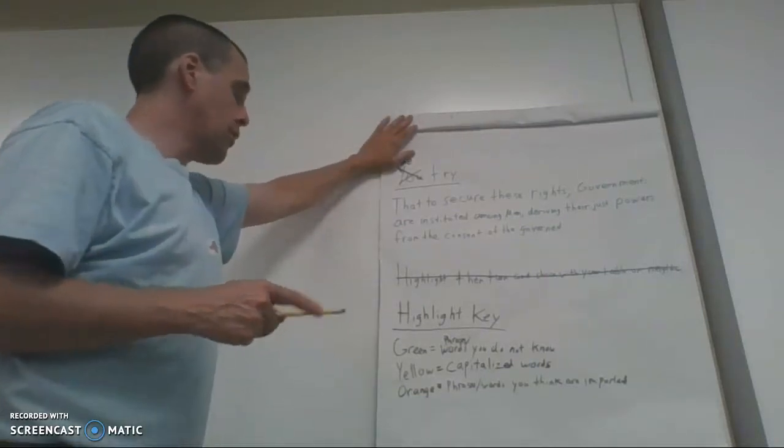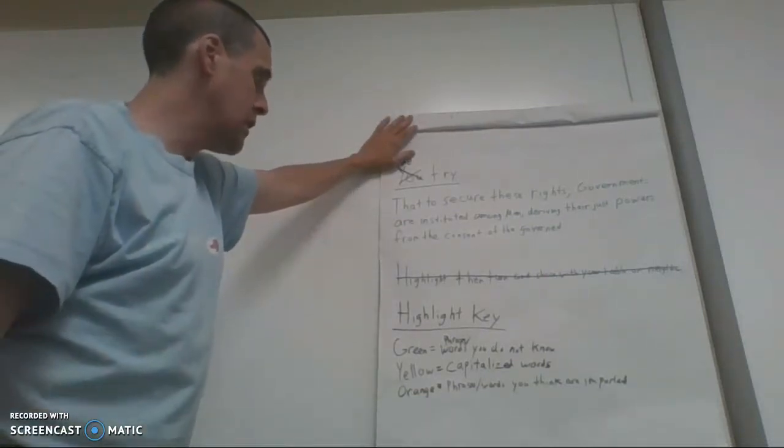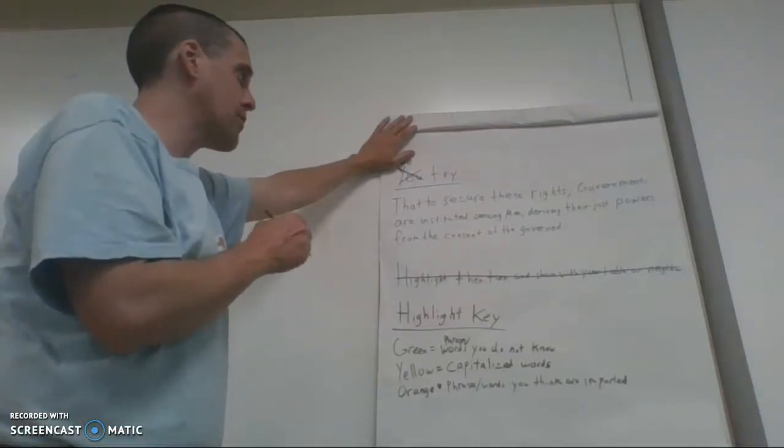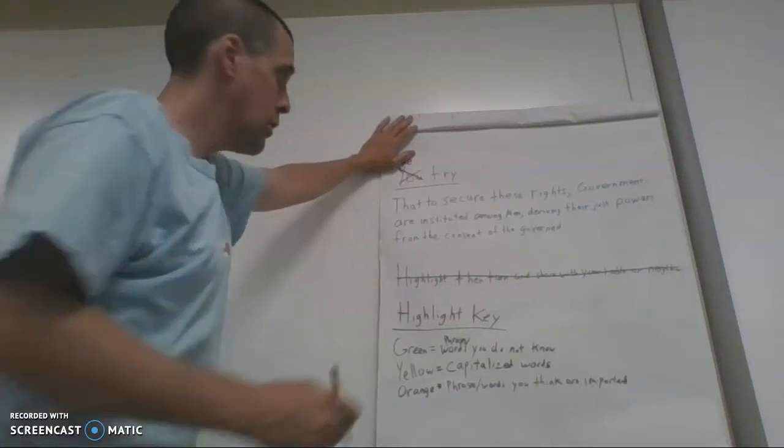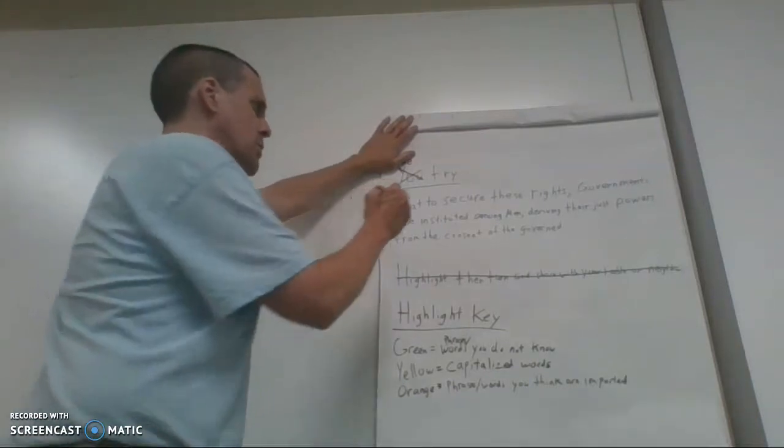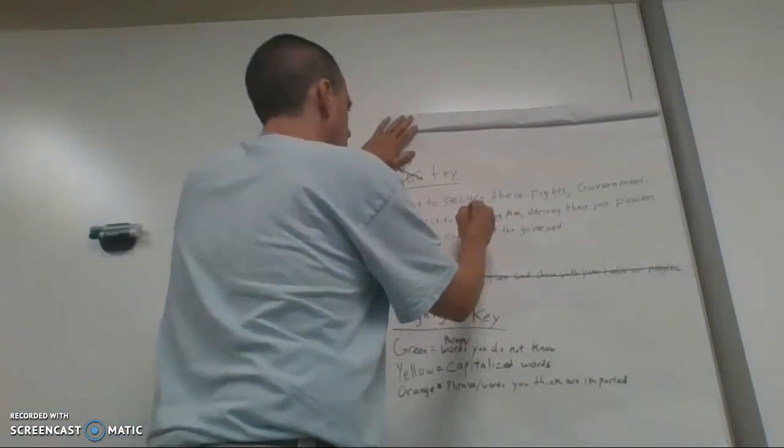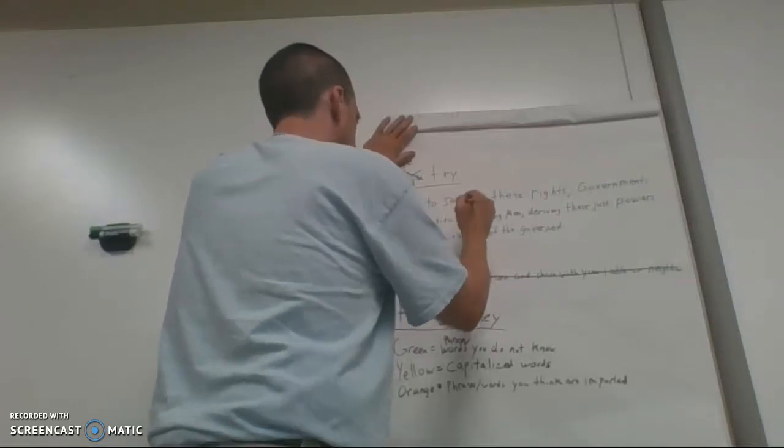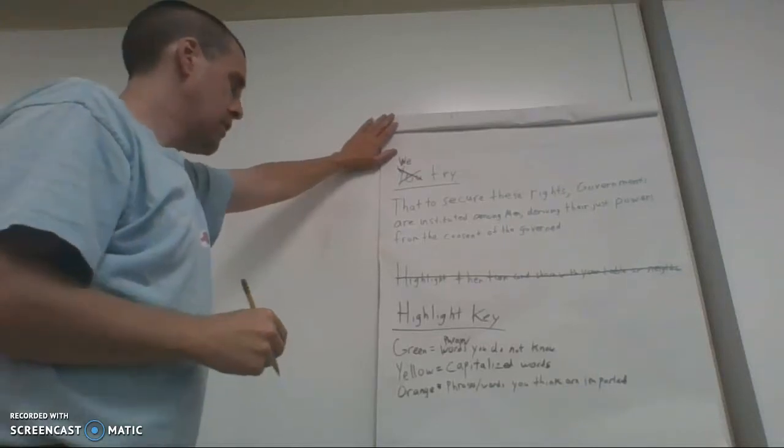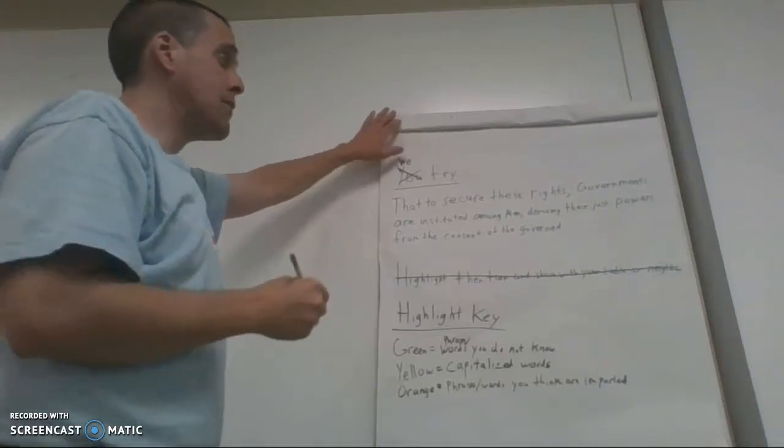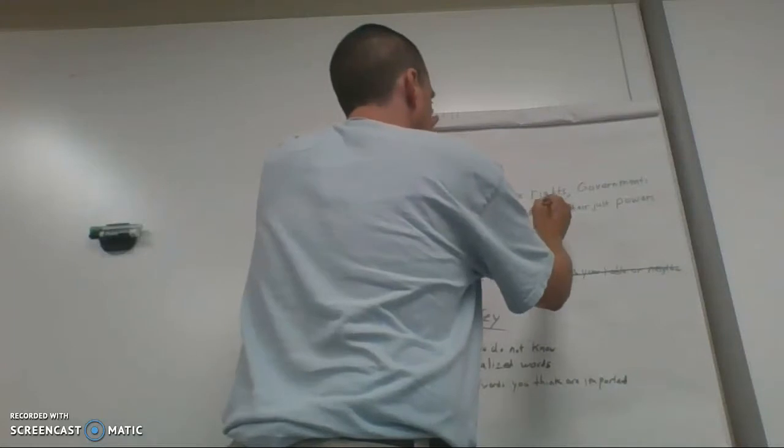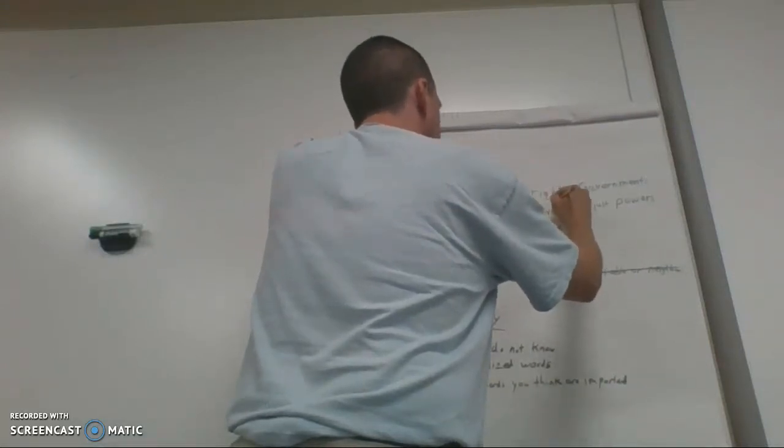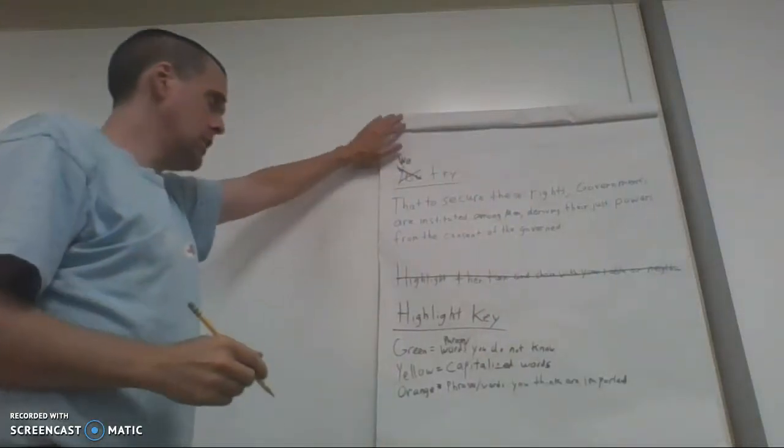And let's look. So our first thing is, let's take our green. Is there any words in here that someone is confused about? Okay. So instituted. All right. So I'm going to highlight this one in green. So we can look that up later. Is there any others? Deriving. Okay. So we're going to look up deriving also. I'm going to put that one in green. Now, any others?